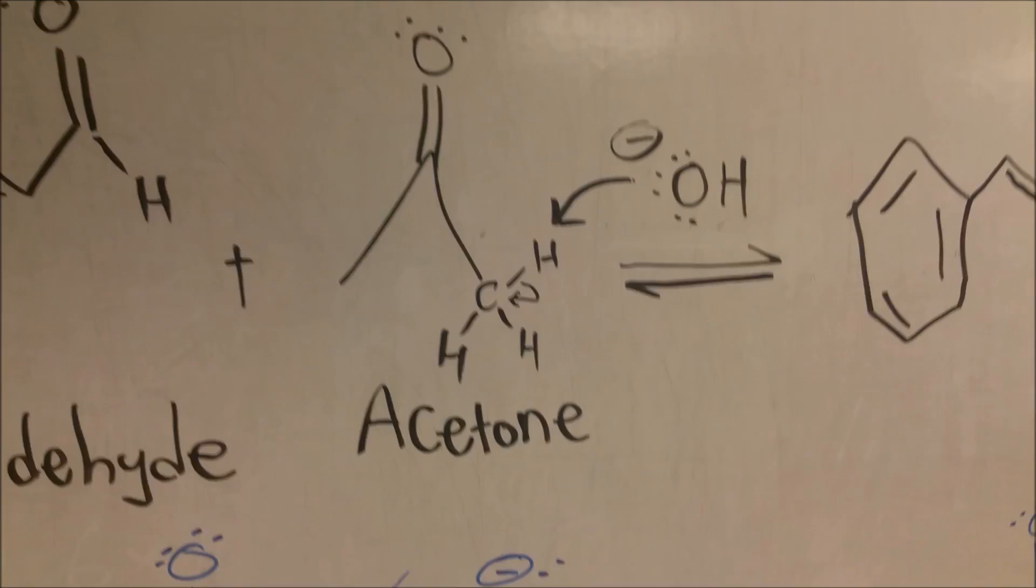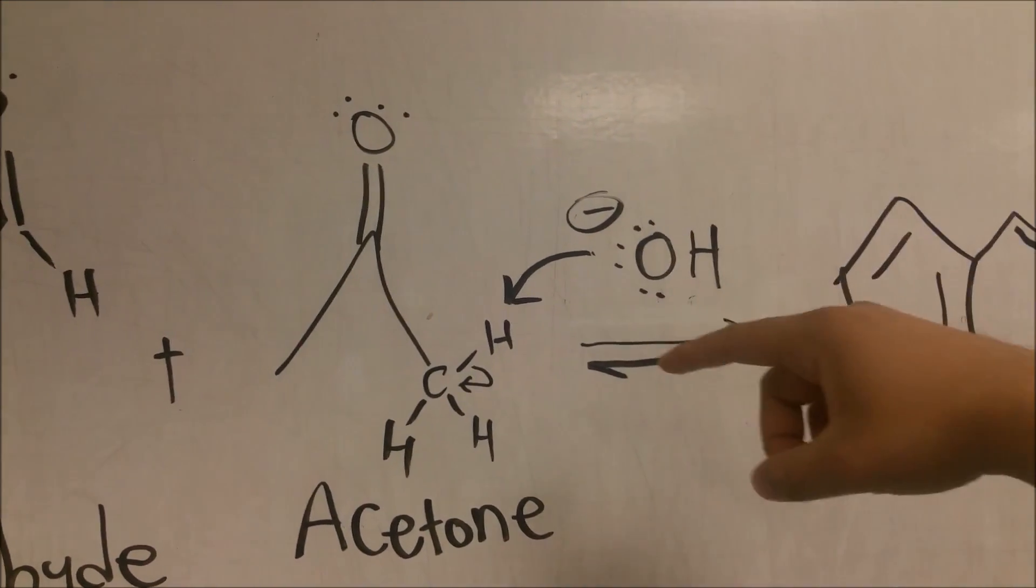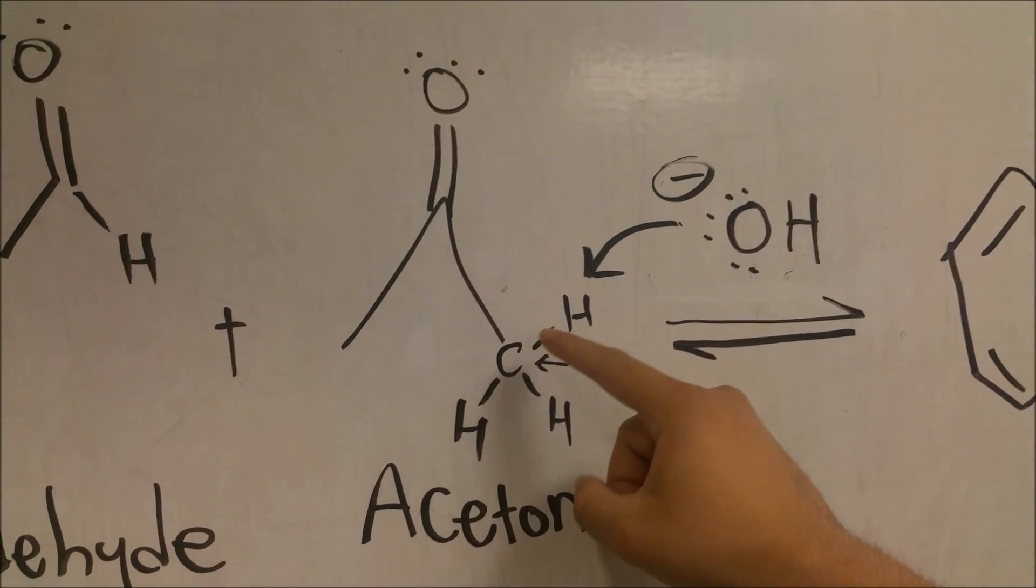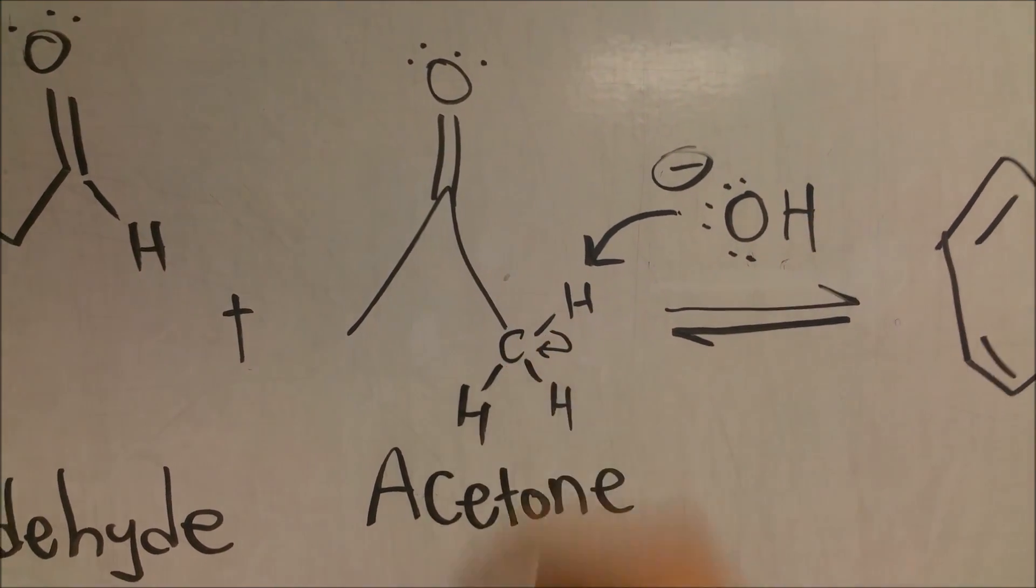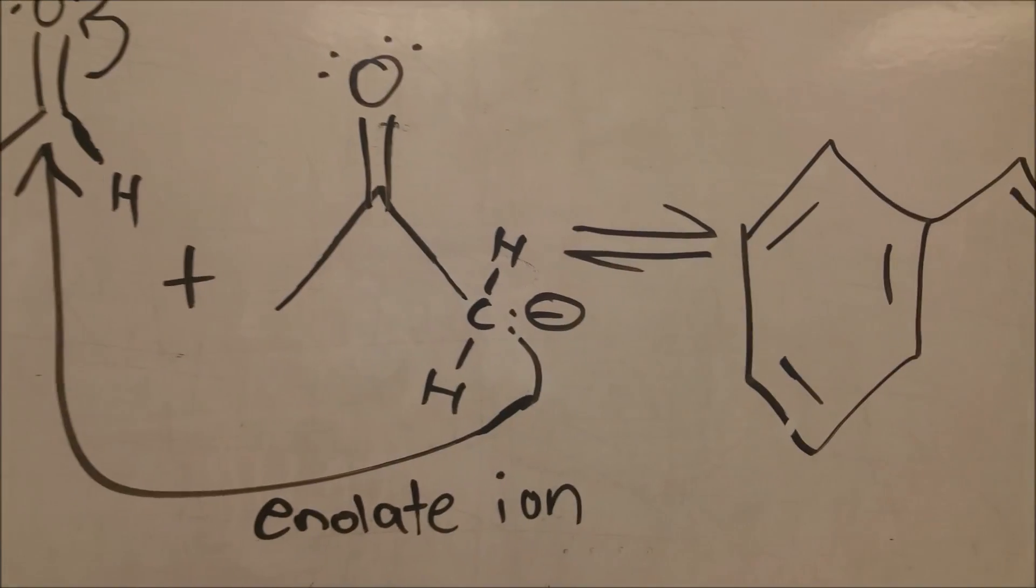So again, the first step, hydroxide will take a hydrogen away, forming a water molecule, and the electrons from this bond will stay with the carbon, resulting in this enolate ion.